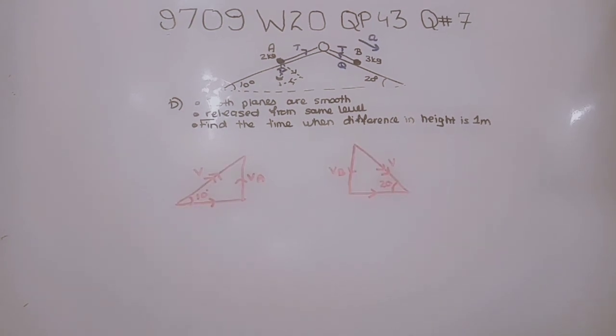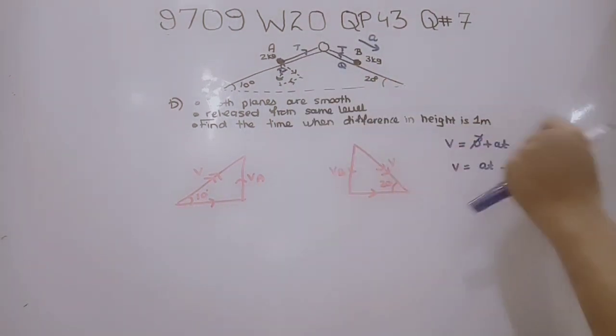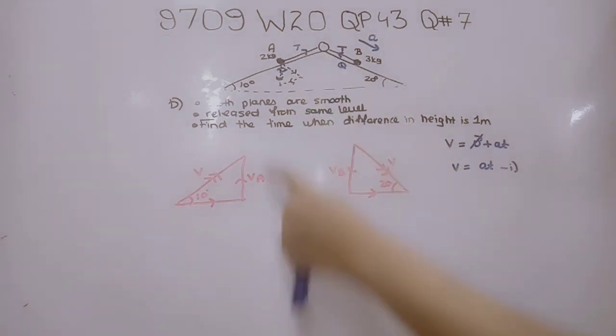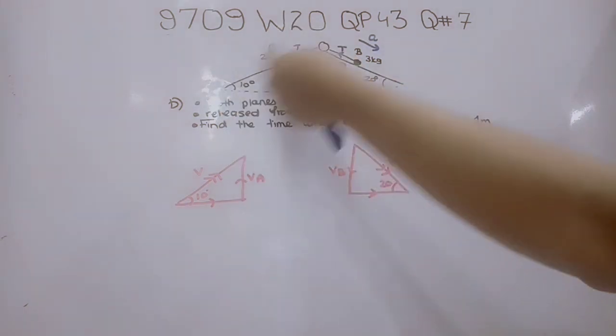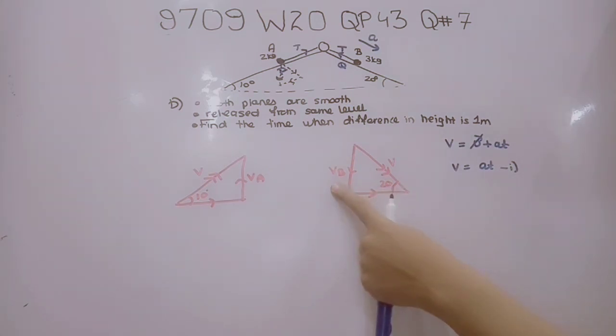With this acceleration, both particles connected together are moving. Our next step is to find the time when the difference between heights is 1 meter. To find distance, it would be easier first to find the expression for velocity. We segregate VA and VB into their vertical components, with VA upward and VB downward at 10 degrees and 20 degrees respectively.